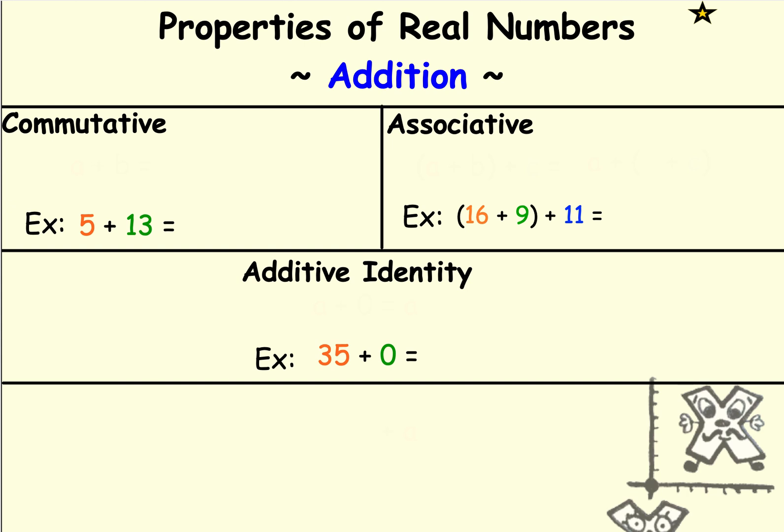So the first one we're going to look at is the commutative property. Let's say that we were going to add the numbers 5 plus 13. Well, we know 5 plus 13 is 18. But does it matter if we do it 5 plus 13, or if we did it in this order, 13 plus 5? We still are going to get 18. And that's what the commutative property says.